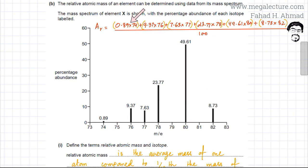So I've summed up the product of the percentage mass into the isotopic mass. So it's 0.89 into 74. That's the first one. Then it's 9.37 into 76. Then 7.63 into 77. Then 23.77% into 78. 49.61% into 80 and so on. And I've divided everything by 100.